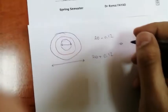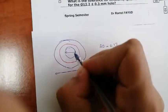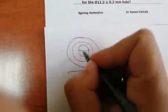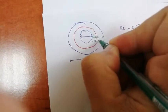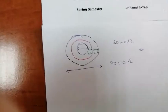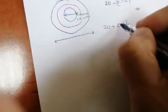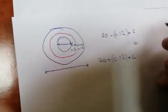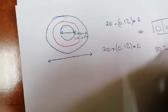We need to make sure that the value between the smallest and largest circles is 0.12 on each side, so 0.12 here and 0.12 here. The circularity tolerance is 0.12, but the total range is 20 plus or minus 0.12, meaning the full variation is 0.24.